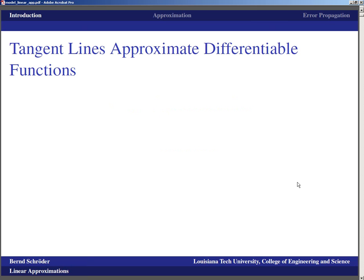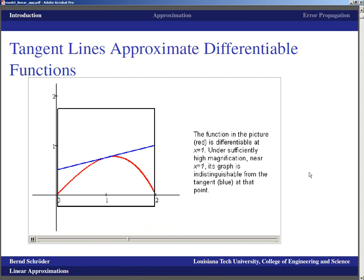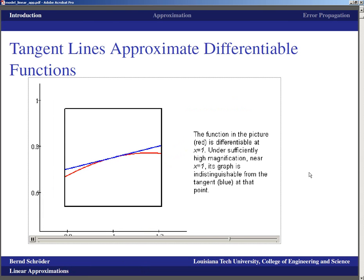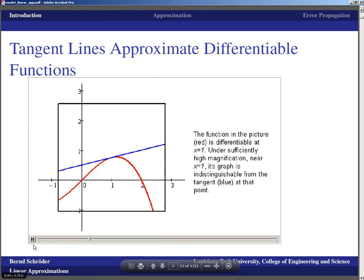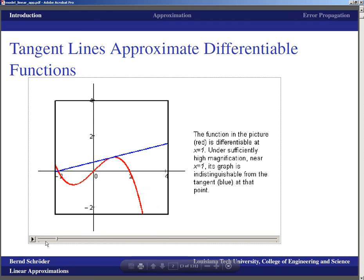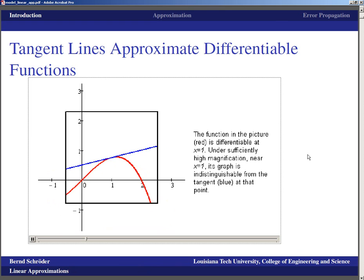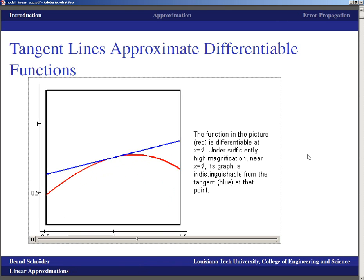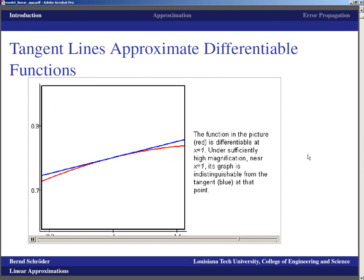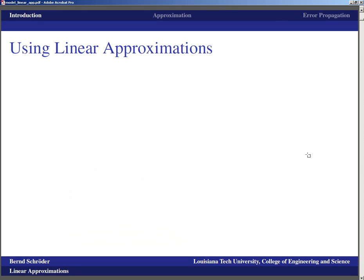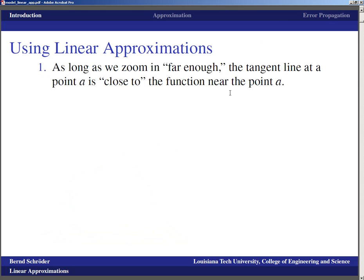We know that tangent lines approximate differential functions and in fact we know that tangent lines approximate differential functions rather well. If we zoom in on a tangent line, then as the zoom gets tighter and tighter, the tangent line looks more and more like the function itself. If we stop at this picture, the tangent line doesn't look much like the function except that it touches rather nicely here. And if we now zoom in, the function and the tangent line look more and more alike.